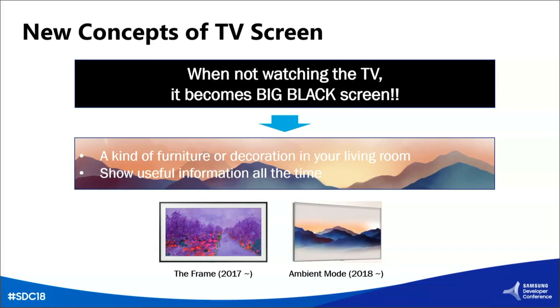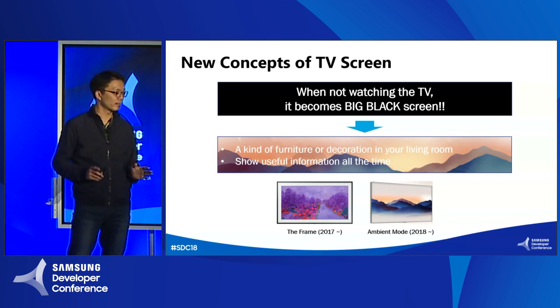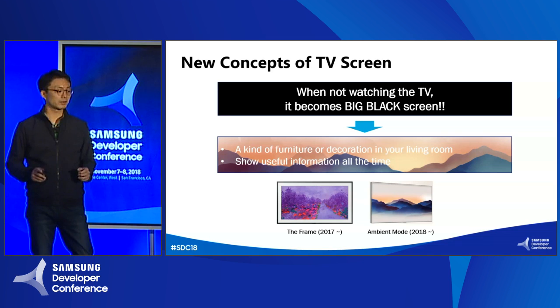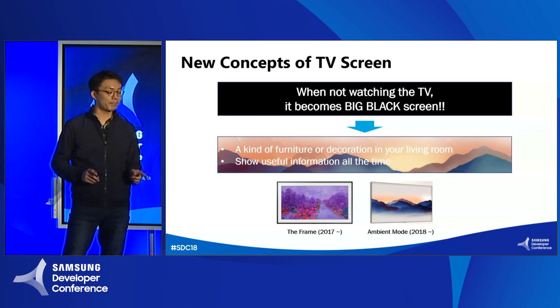Lifestyle TV — what is it? Have you heard about this TV name? It's very hard to define lifestyle TV, but I can say that at least it is more than watching TV. So when the TV is not showing TV programming, what do you expect on TV? When you don't watch TV, as you know, it becomes a black screen. This is a normal situation, but Samsung wanted to change this. So we define the lifestyle TV as a kind of furniture or decoration in your living room, or it can show useful information at all times. Samsung has released two lifestyle products: The Frame last year, and ambient mode of QLED TV this year.